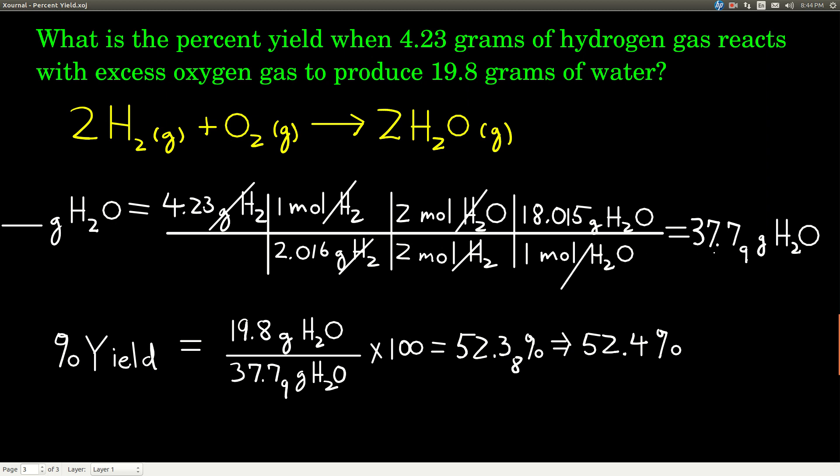So, this number right here, this is our theoretical yield. It's how many grams of water we could make theoretically. We calculated this.